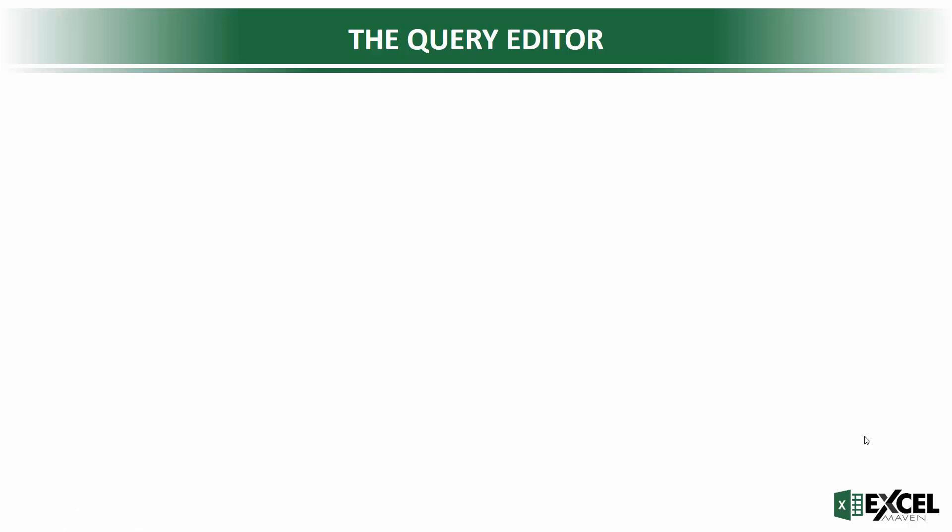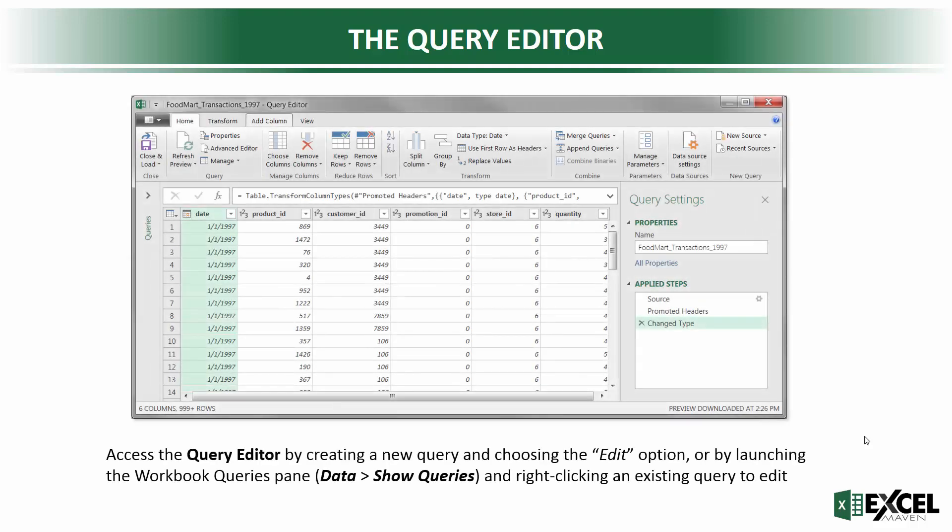Once you've created a connection to your data source, you can open up what's called the Query Editor, and it looks something like this. You can access this Query Editor window in a few different ways. One is to create a new query and choose the Edit option, and another is to launch the Workbook Queries pane from the Data tab so that you can right-click on an existing query and edit from there.